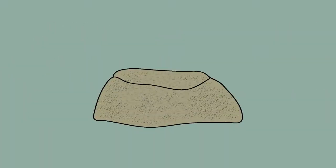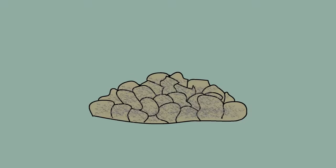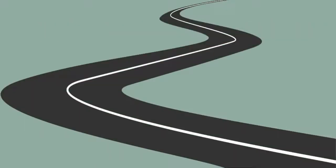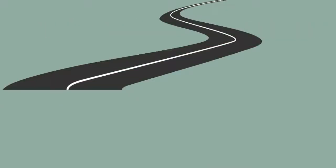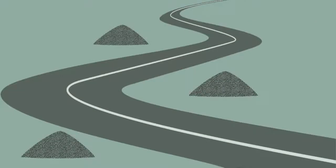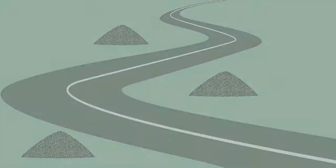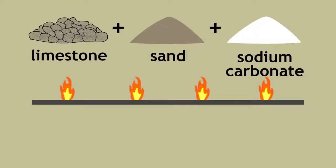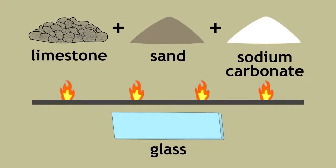Limestone can even be crushed and used as an aggregate when paving roads. The term aggregate simply refers to crushed stones and minerals for construction or road building purposes. When limestone is heated with sand and sodium carbonate, certain types of glass can be made.